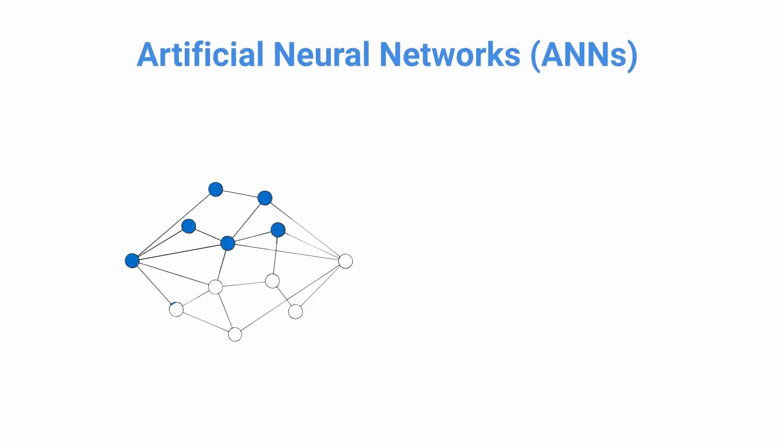Artificial neural networks, or ANNs, or connectionist systems, are inspired by the biological neural networks that constitute animal brains. Such systems learn to do tasks by considering examples, generally without task-specific programming.